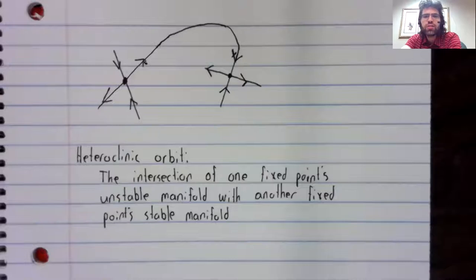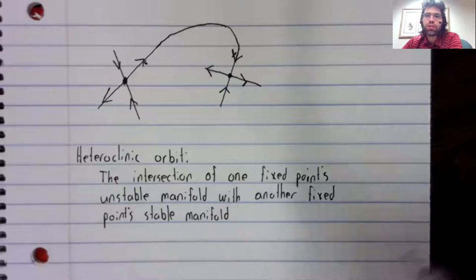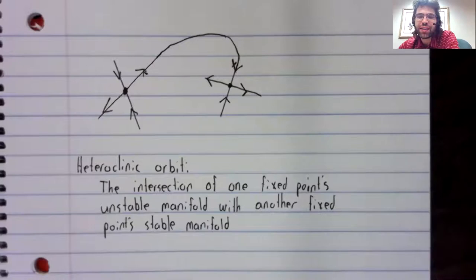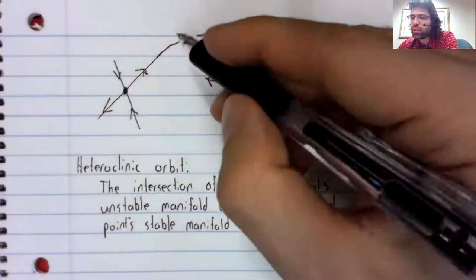We call these heteroclinic orbits, where sometimes we say heteroclinic connections because we're not really orbiting anything. We're connecting two fixed points.